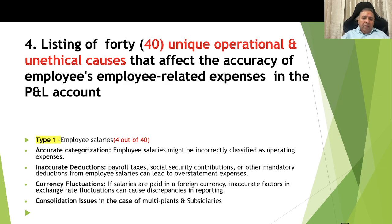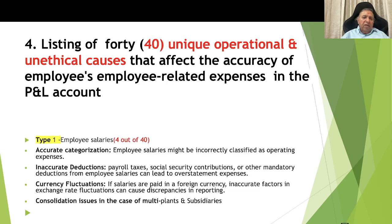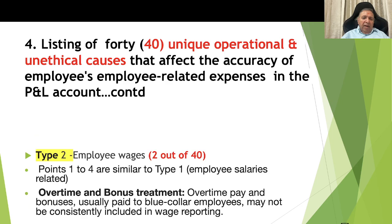Cause 3 for employee salaries, currency fluctuations: if salaries are paid in foreign currency, inaccurate exchange rate factors can cause discrepancy in reporting. Cause 4 is consolidation issues in the case of multi-plant and subsidiary companies. Type 2, employee wages primarily related to blue-collar workers: the 4 points are similar to those stated for salaries. An additional point is overtime and bonus treatment: overtime pay and bonuses usually paid to blue-collar employees may not be consistently included in wage reporting. Usually overtime is not paid to white-collar employees, though exceptions exist.